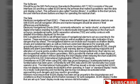There are two different types of electronic charts in use with ECDIS, and navigation officers and marine managers should be aware of their differences and limitations. Electronic Navigational Charts, commonly referred to as vector charts, are layered with digital information enabling the mariner to electronically interrogate features on the chart such as buoys, navigational marks, traffic separation schemes (TSS), and safety contours, with detailed information displayed for the user.